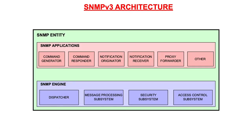Here we see the basic architecture developed for SNMP version 3, although SNMP version 1 and version 2c also satisfy this architecture. We see that an SNMP entity consists of applications as well as an SNMP engine. The SNMP engine includes multiple modules, of which the dispatcher, message processing subsystem, and security system must always be present. On the next slide we will show how this architecture can be used for both managers and agent systems.